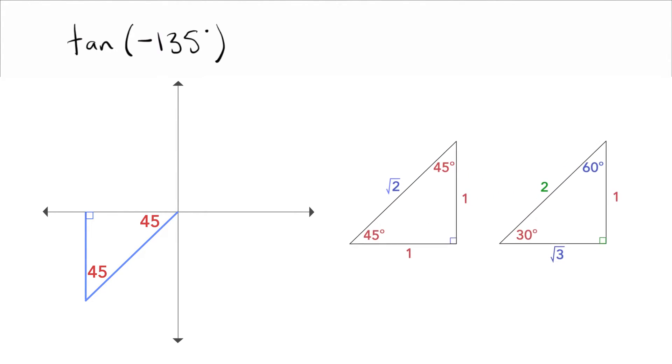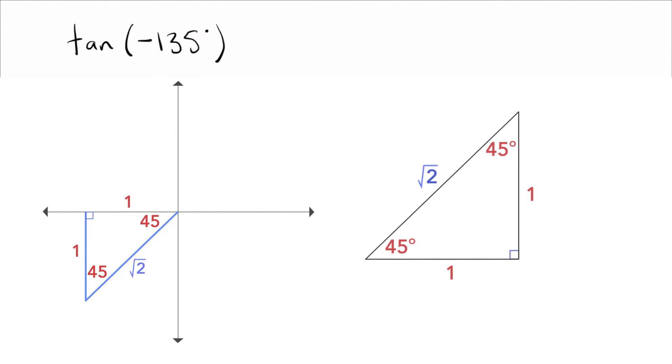Okay, so again, that is one of my special triangles, right? 45, 45, 90. The sides are 1, 1, square root of 2. I need to check if any of them need to be negative. They do, because I'm scooting to the left 1, so that's negative 1. I'm going down 1. That's also negative 1.